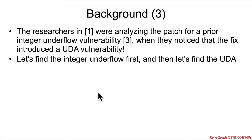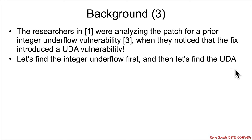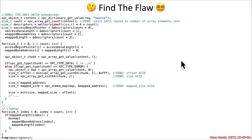This particular vulnerability was found while researchers were analyzing a previous patch for an integer underflow vulnerability. They looked at the fix Apple provided and saw that fix actually introduced a new out-of-bounds vulnerability. Using knowledge of integer overflows and underflows, we're going to look for unsafe math leading to an integer underflow. Once you find that, I'll give you the patched code with the fix, and you'll find the out-of-bounds vulnerability inside that. Here's some pseudocode for the vulnerability — go ahead and look at the code on the website and find the integer underflow to start with.